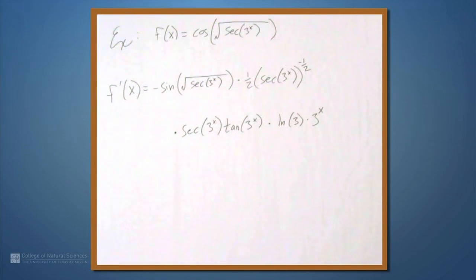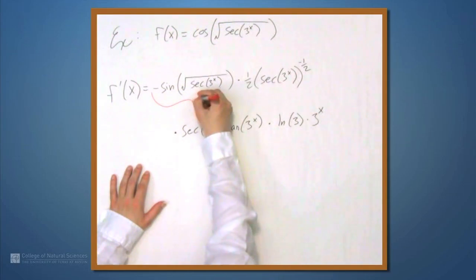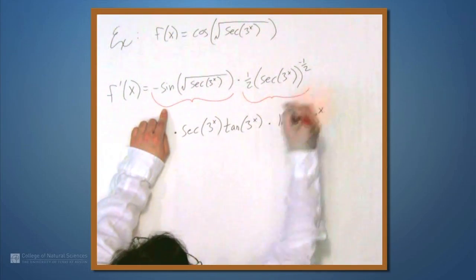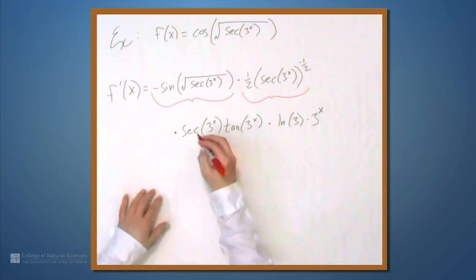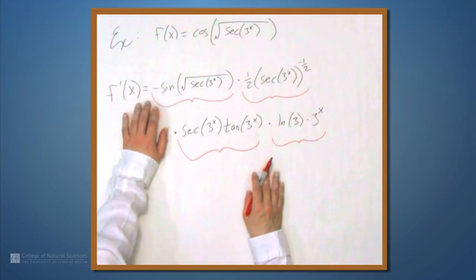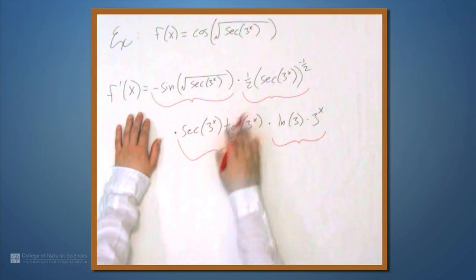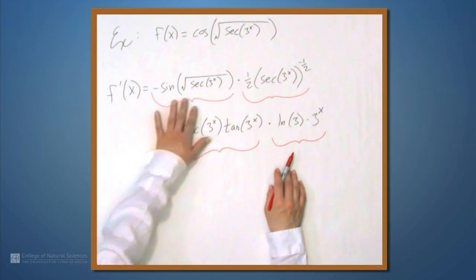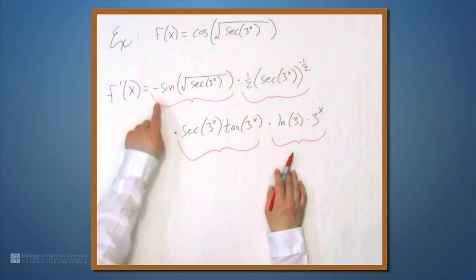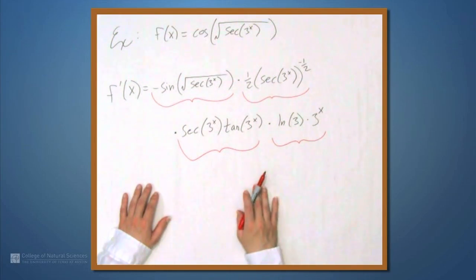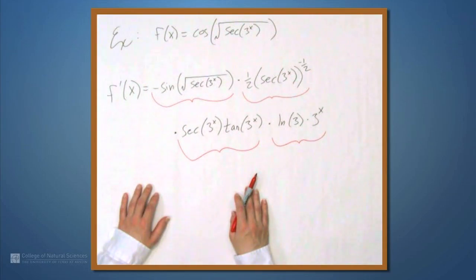This looks very complicated, but let's look at it in the pieces in which we produced it. There's no reason to simplify this unless you're told to do otherwise — you probably won't be. Think of it in terms of these individual pieces; we develop them one at a time. You don't have to worry about what's inside when you're writing down the negative sine, or the one half to the negative one half. You're always dealing with only one function at a time. So if you can do this, you can do just about anything you'll ever be asked to do with the chain rule.